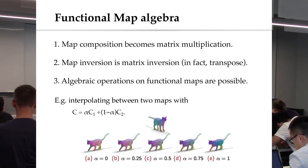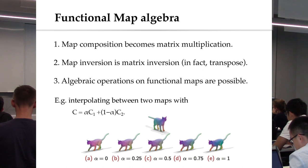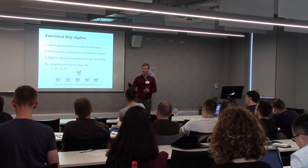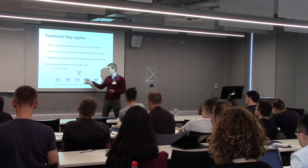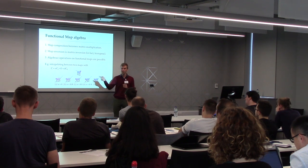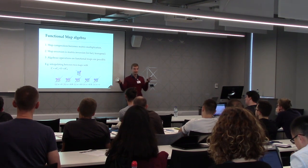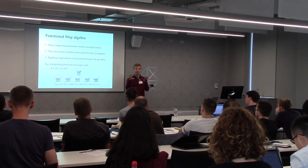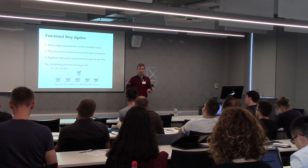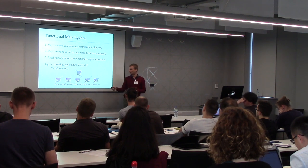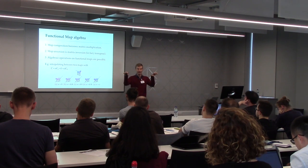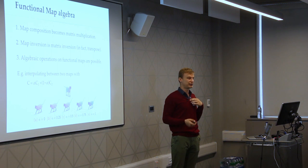The functional map representation has some nice algebraic properties. Map composition corresponds to matrix multiplication. Map inversion corresponds to matrix inversion — for a bijection, finding the inverse map just means inverting the matrix. You can also do things impossible with normal point correspondences: given two different correspondences between a pair of shapes — one mapping left to left, another mapping left to right — you can take a linear combination (average) of the two matrices, effectively treating the result as a probability distribution.